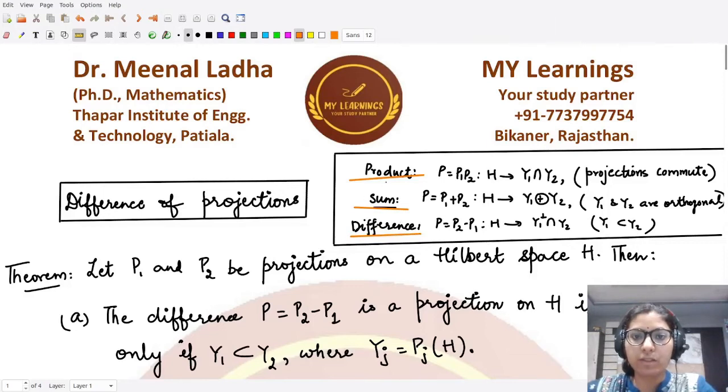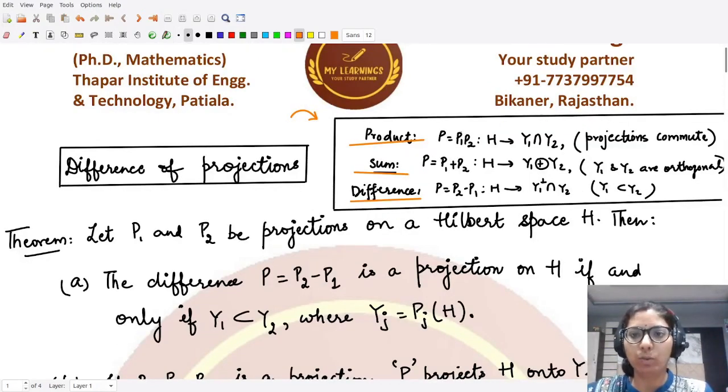What are the basic differences? I have listed down all the differences here, so let's have a look at this box. First of all, in case of product, whenever you have two projections P1 and P2, your projections would map H to Y1 intersection Y2, where Y1 is the image space corresponding to projection P1 and Y2 is the image space corresponding to projection P2.